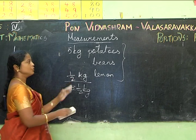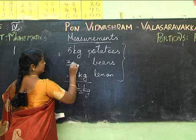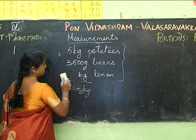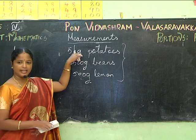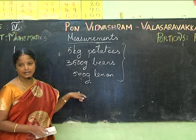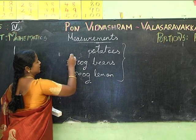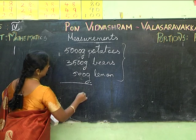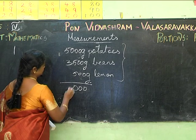In case you have values in mixed units, like grams and kg, you must convert everything to the same unit before adding. For example, if I have 3500 grams and 500 grams, I change them all to grams and add: 5000 g + 3500 g + 500 g = 9000 grams, or 9 kg.